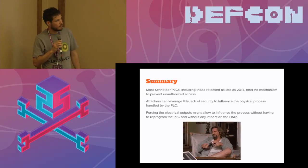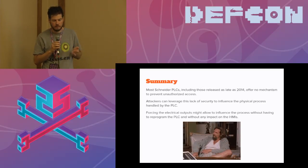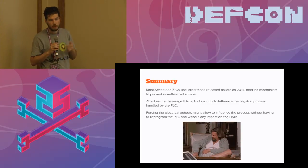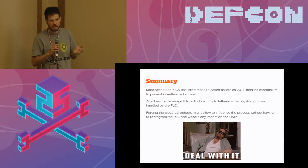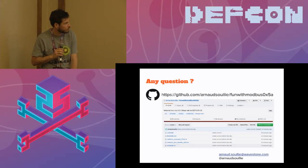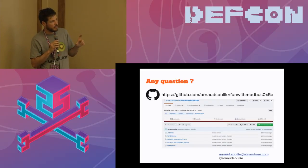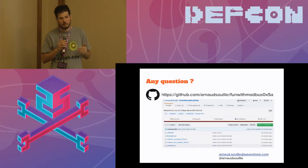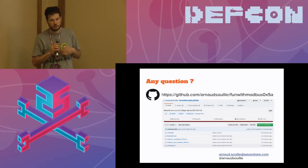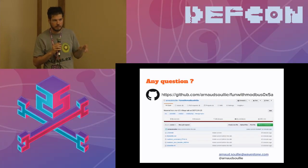To sum things up: most Schneider PLCs you will find in assessments have been vulnerable for ten years to this unauthorized access vulnerability. Attackers can leverage that to do whatever they want with the PLC, including directly forcing outputs, which may allow stealthy attacks on your process. What can you do? At the moment, you have to deal with it. Everything is at this GitHub address. I hope to clean up the code and do a pull request to Metasploit — they're quite picky about code quality and at the moment it's pretty rough — but in a few months I hope to submit it. You can also find the slides and a few videos of me pentesting PLCs on GitHub.